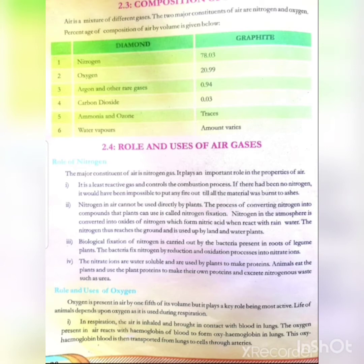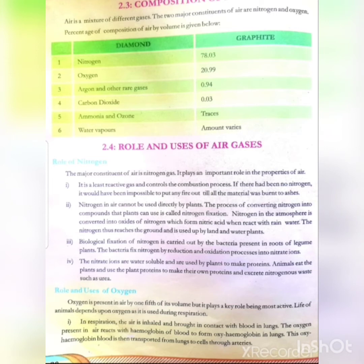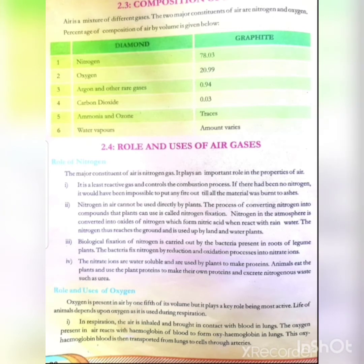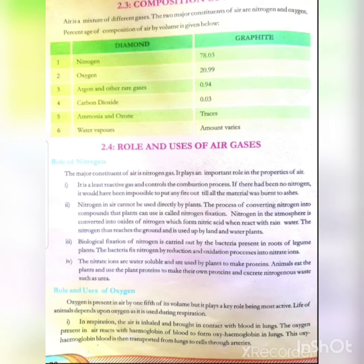The fourth point is that the nitrate ions are water-soluble and are used by the plant to make proteins. When we water the plant, these nitrate ions are dissolved in water and become available to the plants. Plants use nitrogen in the formation of protein. Animals eat the plant and use the plant protein to make their own protein, and extrude nitrogen waste such as urea.